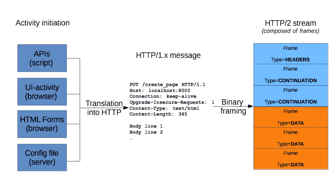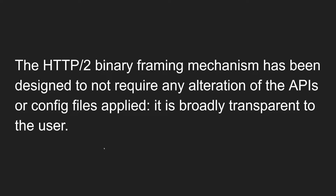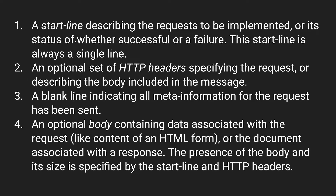In the HTTP 1 message, the first line contains the method, path, URL, and HTTP version, followed by headers like host and connection, and at the bottom is the body. In HTTP 2, it is composed of frames — for example, frame type equals headers, frame type equals continuation. The HTTP 2 binary framing mechanism is designed to not require any alteration of the APIs or config files applied, and it is broadly transparent to the user.